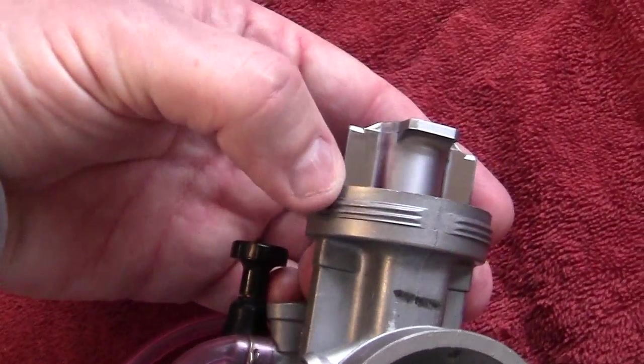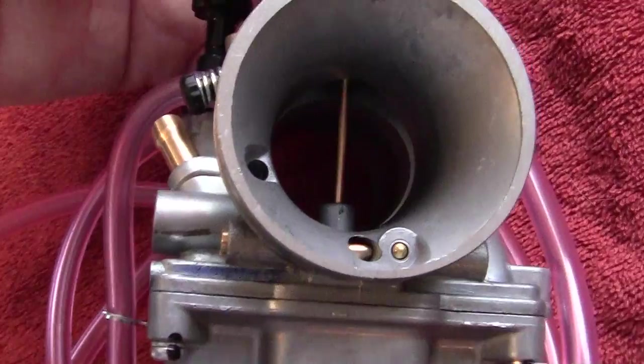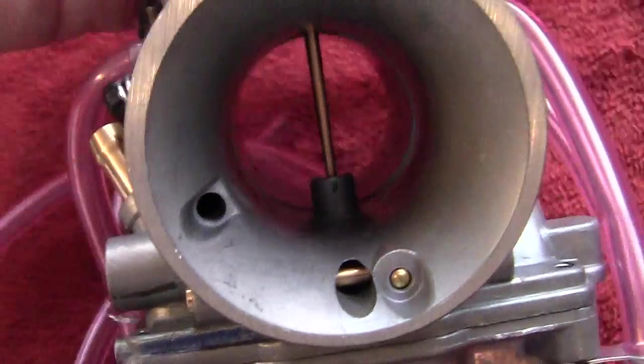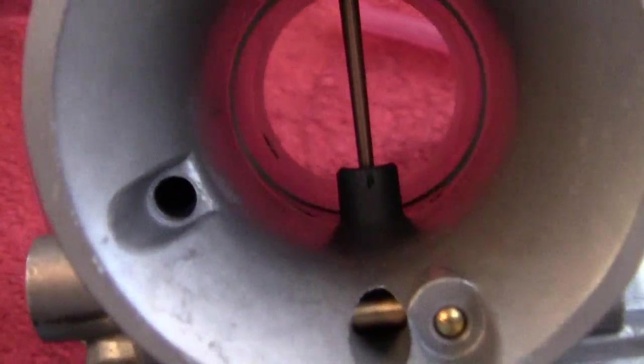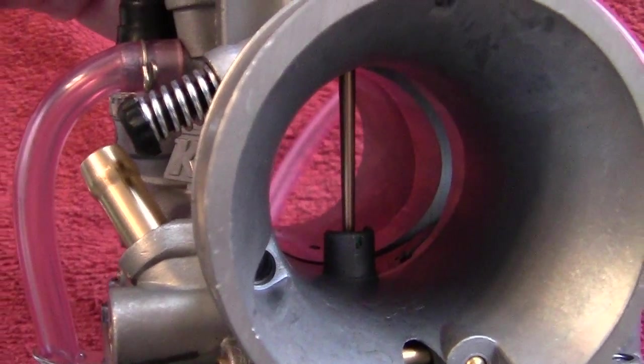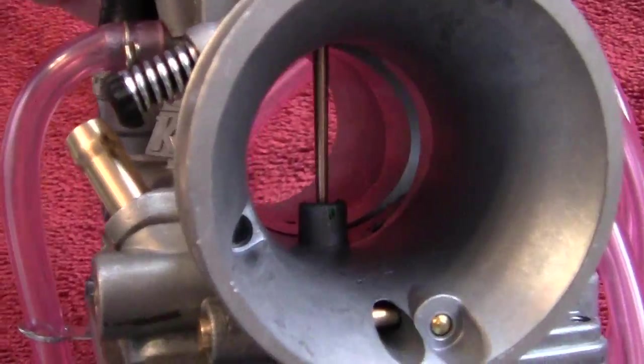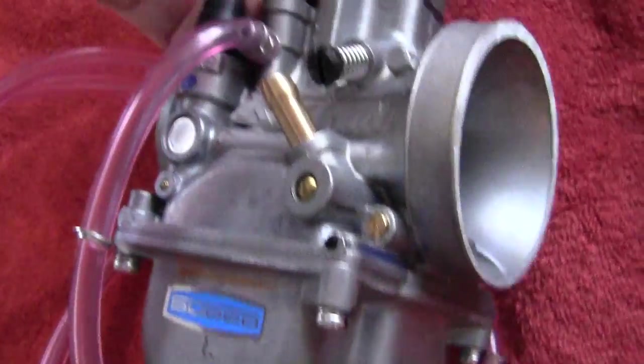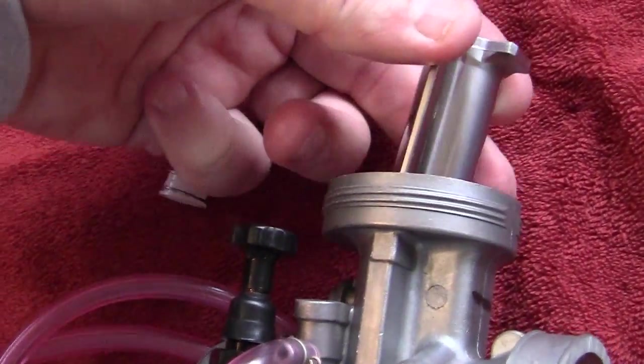This is the carb slide right here, and you can see part of it down here. If you look very close you'll see that there is a green mark on the right where the jet needle comes out. Now I'm going to pull this slide out here and lay it down.